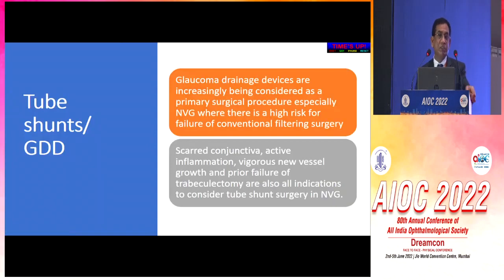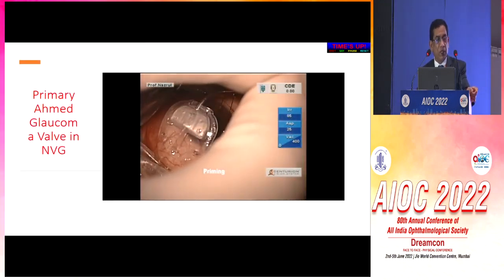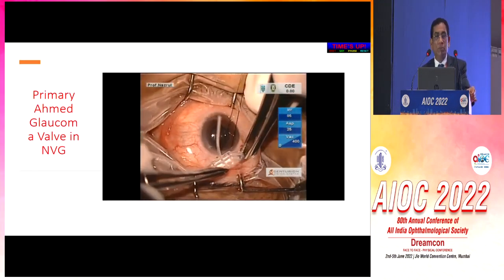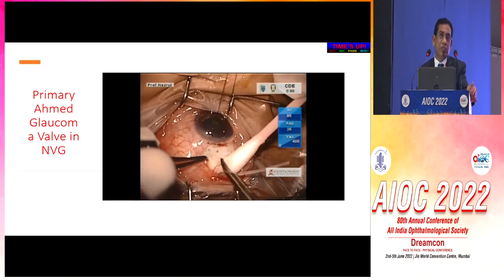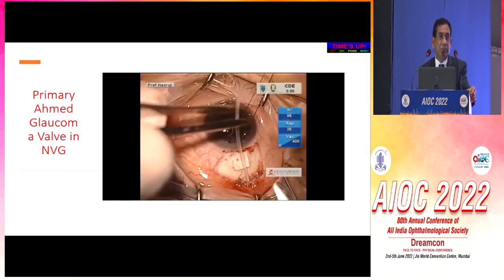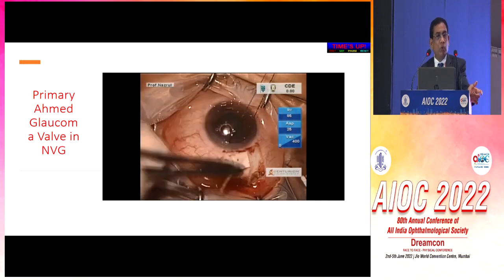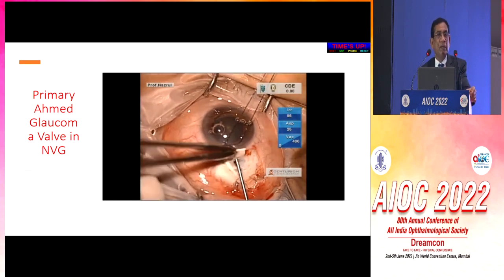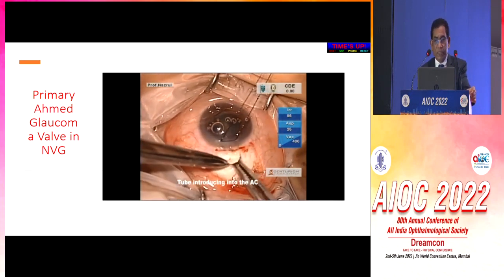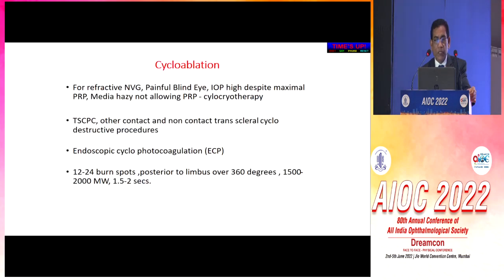During trabeculectomy, we perform a modified trabeculectomy utilizing higher concentration MMC and longer exposure time. I do a larger flap for this kind of patient so there is a larger opening and a better chance of decreasing intraocular pressure. Tube shunt is the choice for neovascular glaucoma because most trabeculectomies fail. Whenever you place a tube, most of the time results are good. Modifications include using MMC, collagen matrix during valve implantation, along with anti-metabolites MMC or 5-FU — the results are better. Cycloablation — endoscopic or transscleral cyclophotocoagulation — is reserved for cases who cannot see well, with a painful blind eye.